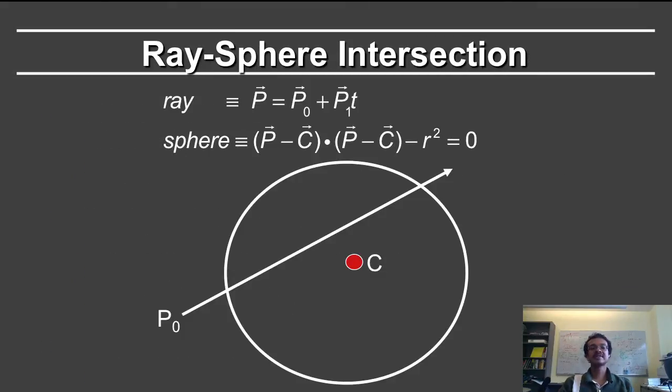Let's first talk about ray-sphere intersection, which is one of the most canonical cases. First, we need to have a way of defining the ray, as well as a way of defining the sphere.